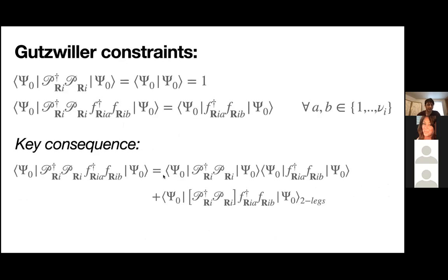It's not surprising we need Wick's theorem here because our wave function is constructed using a single-particle wave function. What the Gutzwiller constraints and Gutzwiller approximation do is kill some of these contractions, making the combinatorics manageable. To understand the meaning of these constraints, it's insightful to look at a particular object. If we evaluate it using Wick's theorem, we get two types of contractions: self-contracted blocks, and cross-leg contributions.